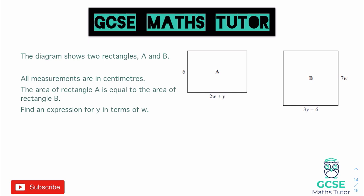Looking at this question, it says the diagram shows two rectangles A and B, and you can see the lengths of the rectangles there with some expressions on the side lengths. All measurements are in centimeters, and the area of rectangle A is equal to the area of rectangle B. Find an expression for Y in terms of W.